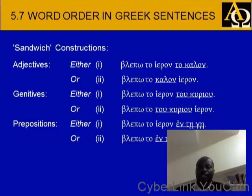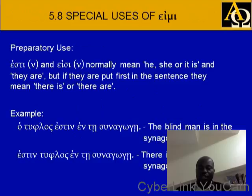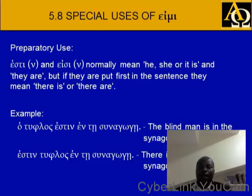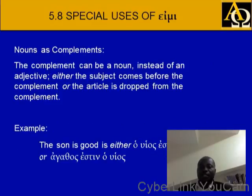Whatever is emphasized will come at the place where it has the greatest emphasis. Special uses of eimi: estin or eisin normally mean he/she/it is and they are. But if they are put first in a sentence, they mean there is or there are. So: ho tuphlos estin en te sunagoge — the blind man is in the synagogue. But when estin is at the beginning, it means there is a blind man in the synagogue — a different meaning.